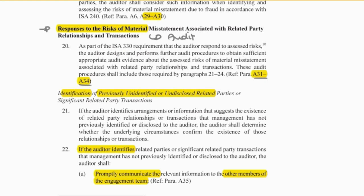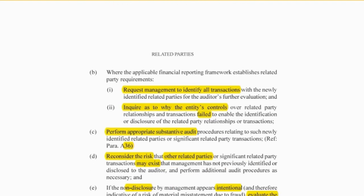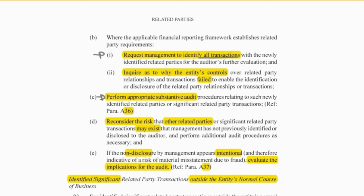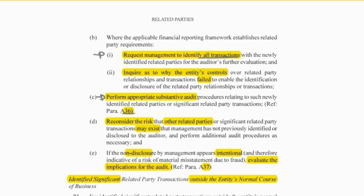Finally, what do you do if you identify related party transactions that weren't disclosed? You're going to have to discuss that first with the audit team so they are aware of it, and then communicate it with management — request management to go and identify all others. Then I need to go and audit the actual transactions that have come back from management. I've highlighted A36 — making inquiries with the related parties or any other party involved, such as legal counsel, testing the accounting records and transactions, and seeing that it has been disclosed subsequently.